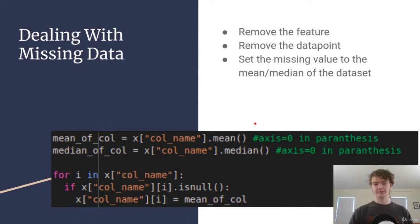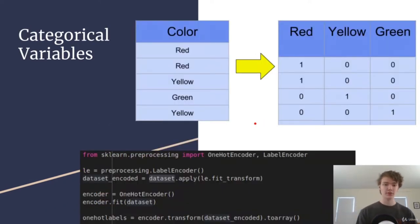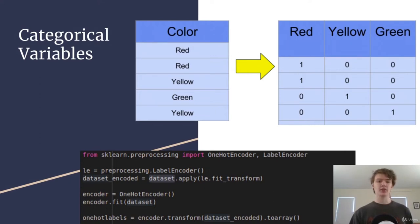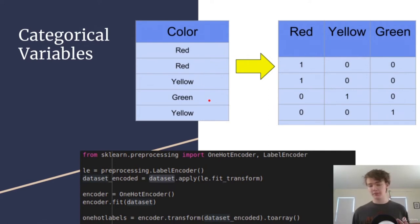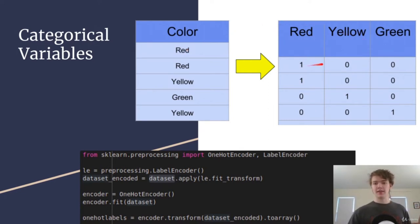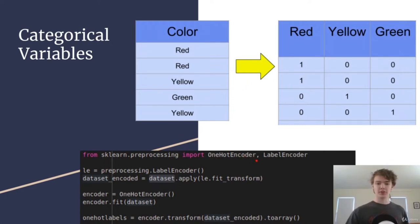Next, dealing with categorical variables. Not all variables are just a set number — some are categorical, meaning they're either this or that with nothing in between. For example, color is either red, yellow, or green. You need to convert that column into a binary format using one-hot encoding, where each category becomes its own column. This is super easy to implement using scikit-learn, and the code is available in the preprocessing notebook on GitHub.